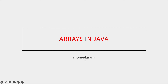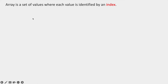Welcome to Mohamedaram. In this video we will see Arrays in Java — how we can declare an array, how we can initialize an array, and how the elements of an array will be stored in memory. An array is a set of values where each value is identified by an index. Array elements can be identified by using an index.